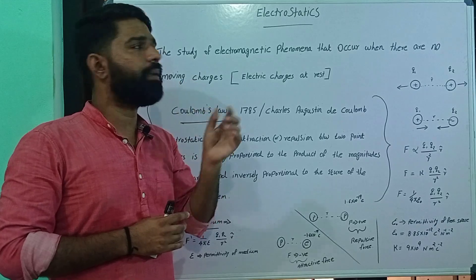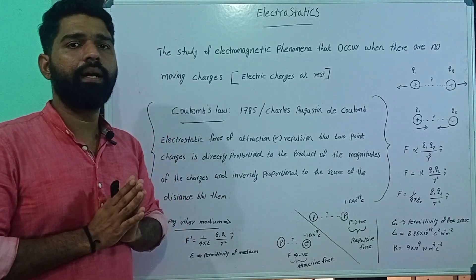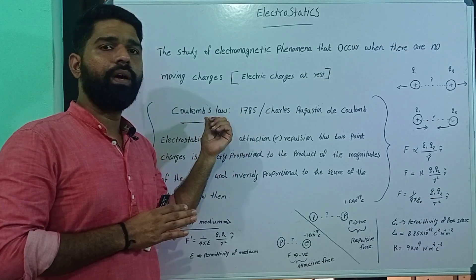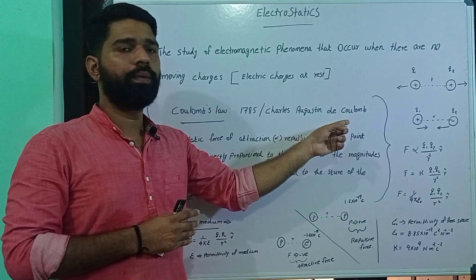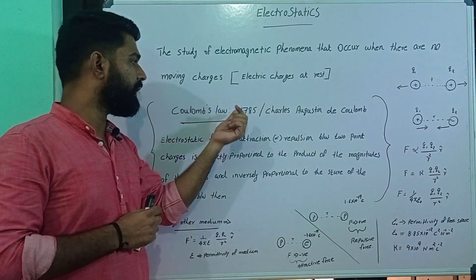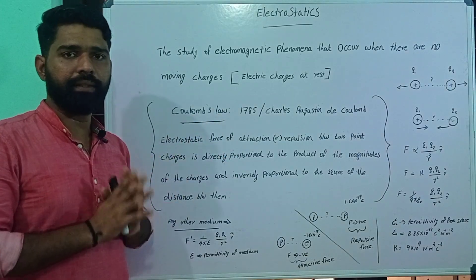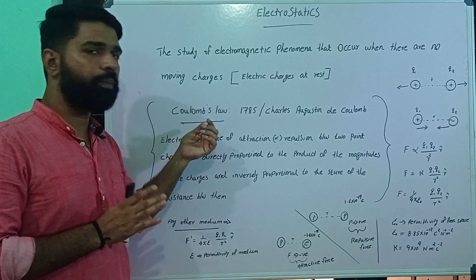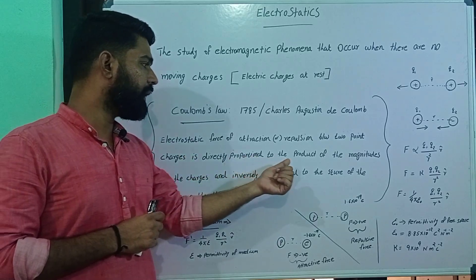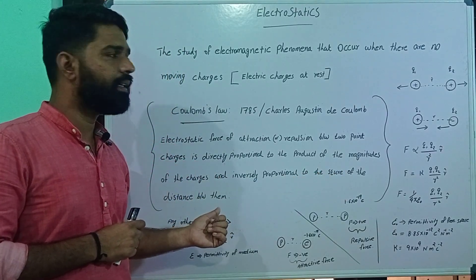In electrostatics there is a very first law which is Coulomb's Law. In the year of 1785, the law was proposed by Charles Augustine de Coulomb, a French scientist. Coulomb's law states that the electrostatic force of attraction or repulsion between two point charges is directly proportional to the product of the magnitudes of the charges and inversely proportional to the square of the distance between them.